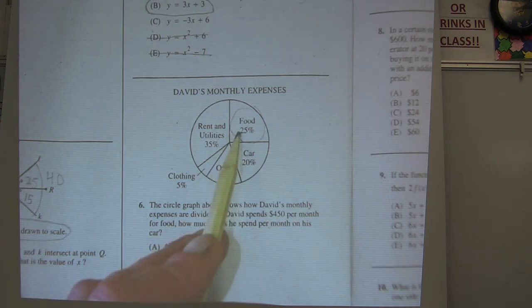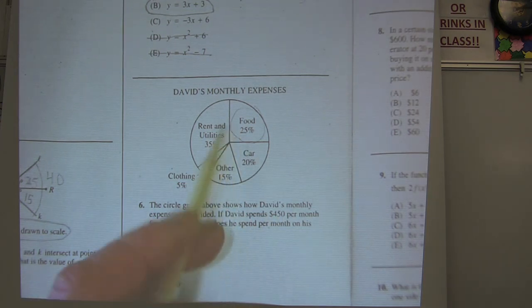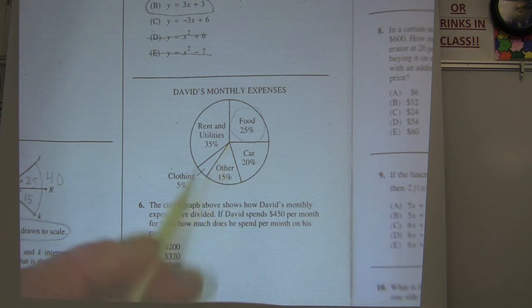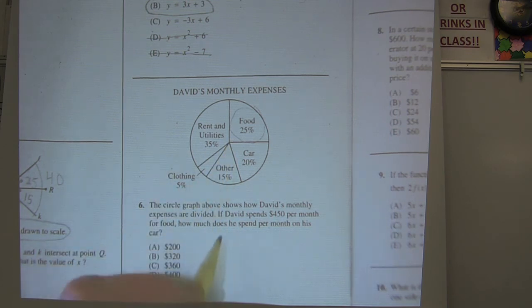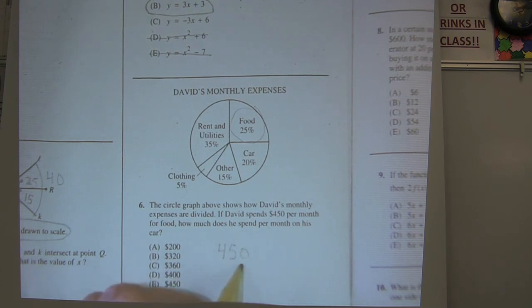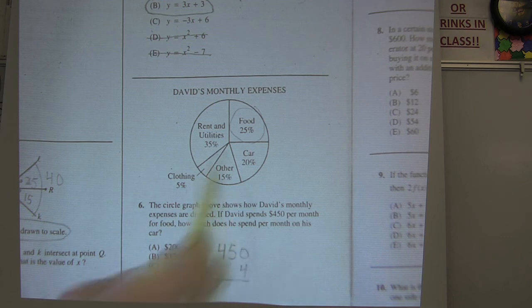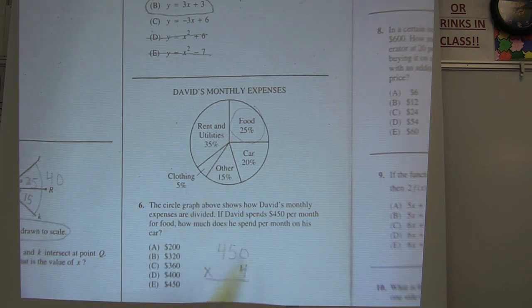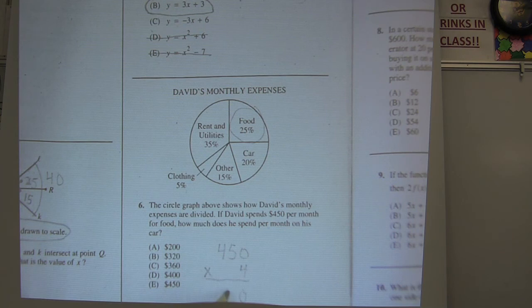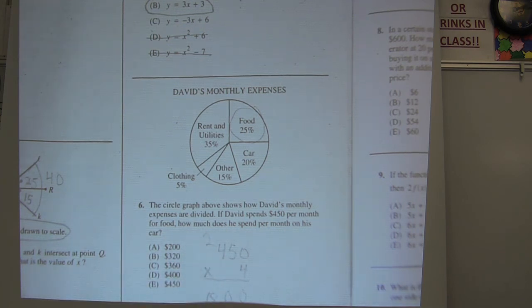So 25% is a fourth of his total. So a quick way to do this—there's probably three or four correct ways—I think a quick way to do this is to multiply that 450 times four, and that will tell us what his total expenditures are. Because this is one-fourth of that. So if I multiply it by four, it will tell me. 20, carry the two. I get 1800. That's his total expenditures.